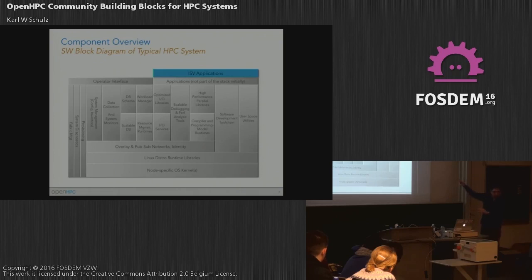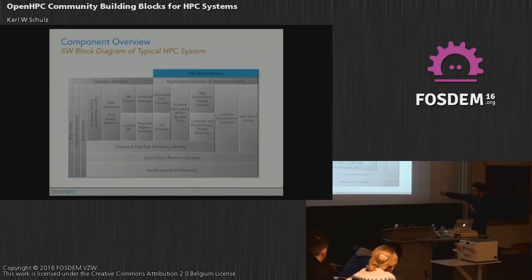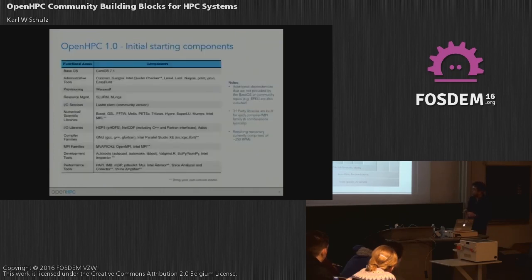We have picked one component from each area, but over time the intent is to provide multiple components in each. As an example, for provisioning today we use something called Warewulf, an open source project. The intent going forward is to have multiple options, which gets back to this idea of having APIs to promote the use of different provisioners.